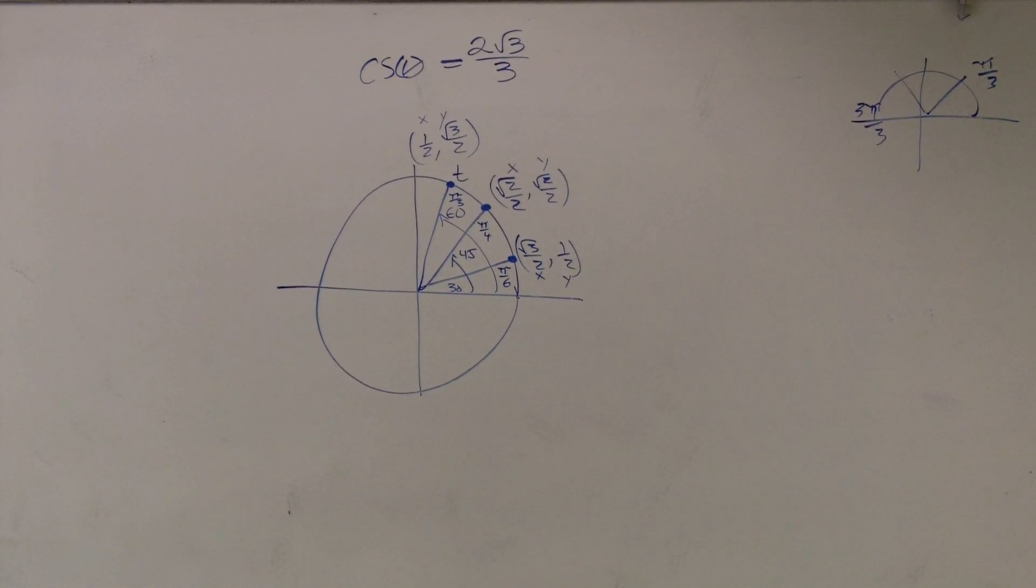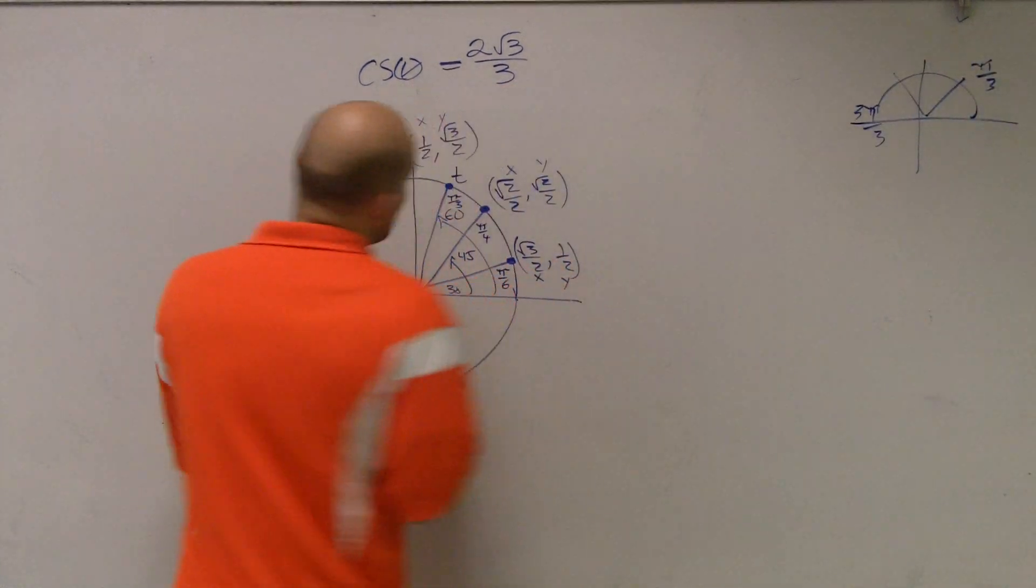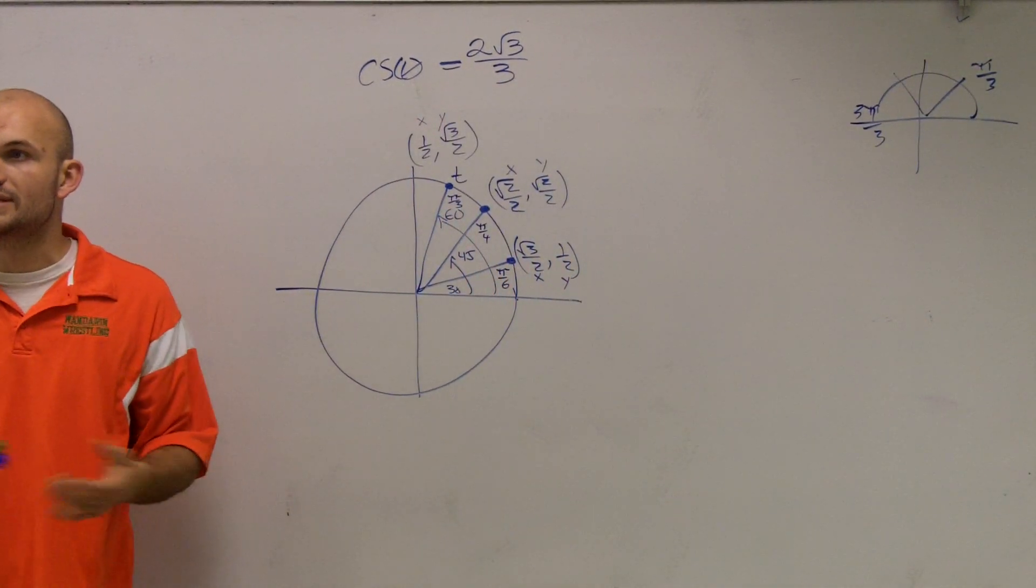If you guys are going to look at this last problem, it says cosecant of theta equals 2 radical 3 over 3. One thing we're going to need to remember is, what is cosecant?